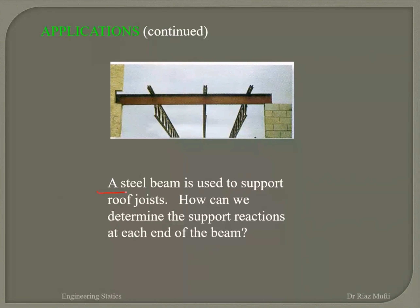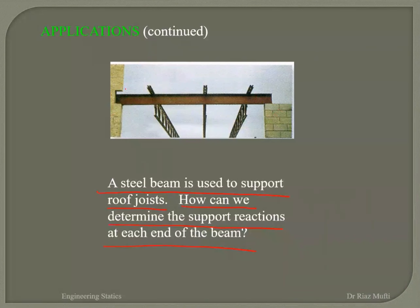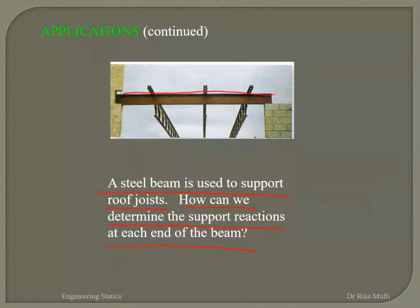Same example here — a steel beam is used to support roof joists. How can we determine the support reaction at each end of the beam? If you want to find the support reactions here and here, that support reaction is linked to this beam only, not to those three beams. So if I draw a free-body diagram, I will draw it of this beam only, and then we'll have reaction forces and active forces, which is the weight of the others.